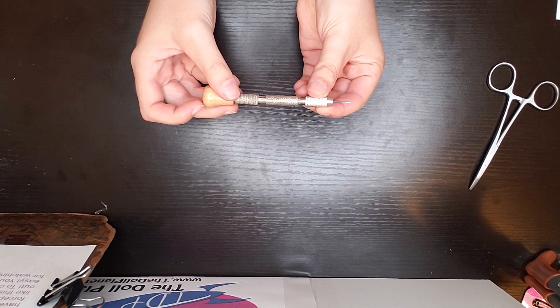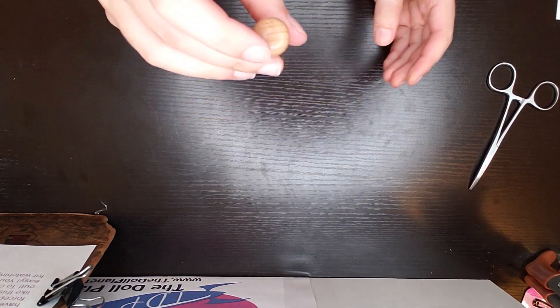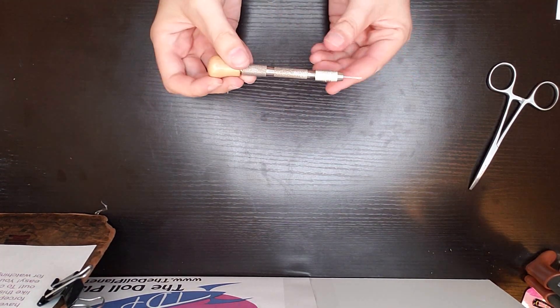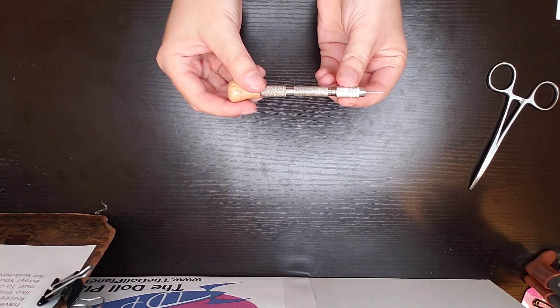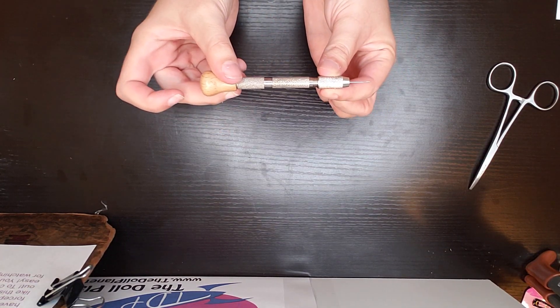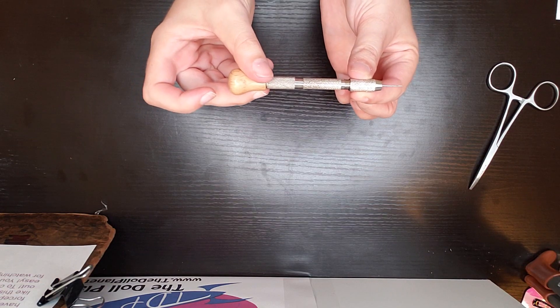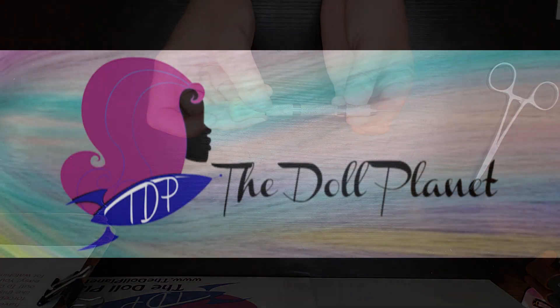Great way to check to see if your tool is in tight enough is hold it upside down. If it doesn't fall out, then you're good to go to get started. You are officially ready to re-root. Thank you for watching, and I'll see you soon.